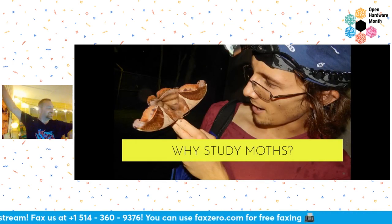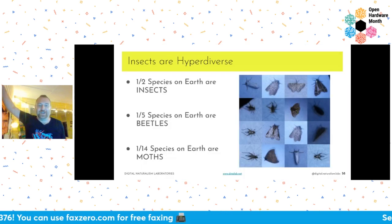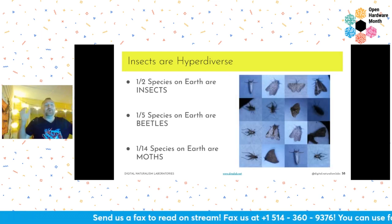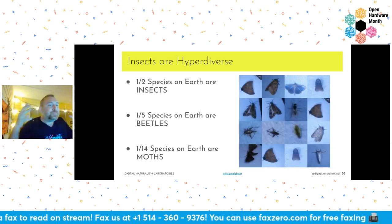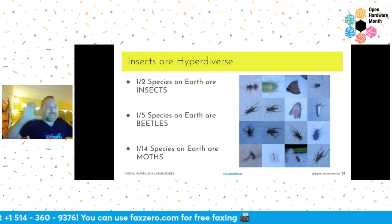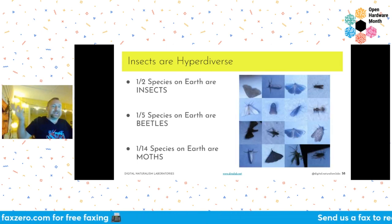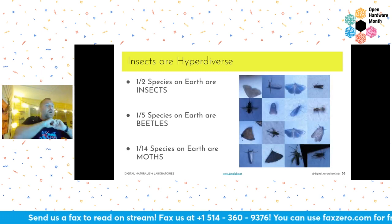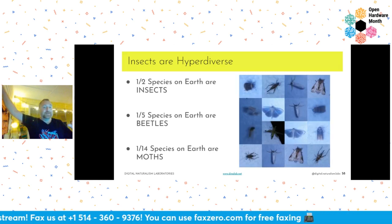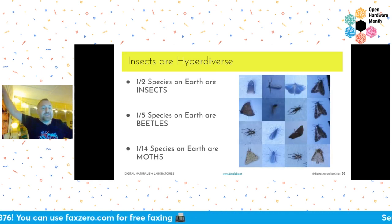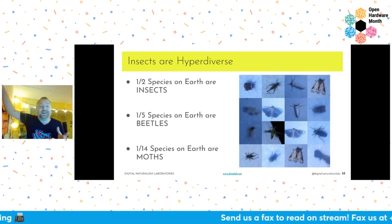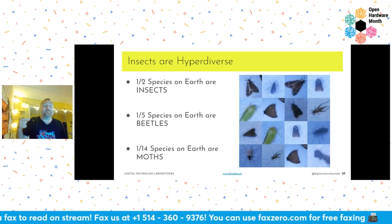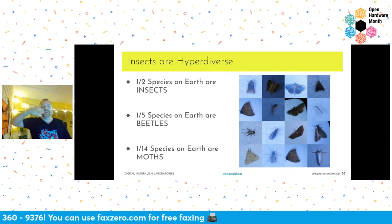Why study moths? If you take all the species on Earth, there are about two million things we've given scientific names to. Half of those — a million — are insects. One in every five is a beetle, and one in every 14 is a moth. These are some of the most speciose things ever. Compare this to mammals: there are only about 6,500 mammal species. So one in every 300 things is a mammal if you pull species out of a hat.